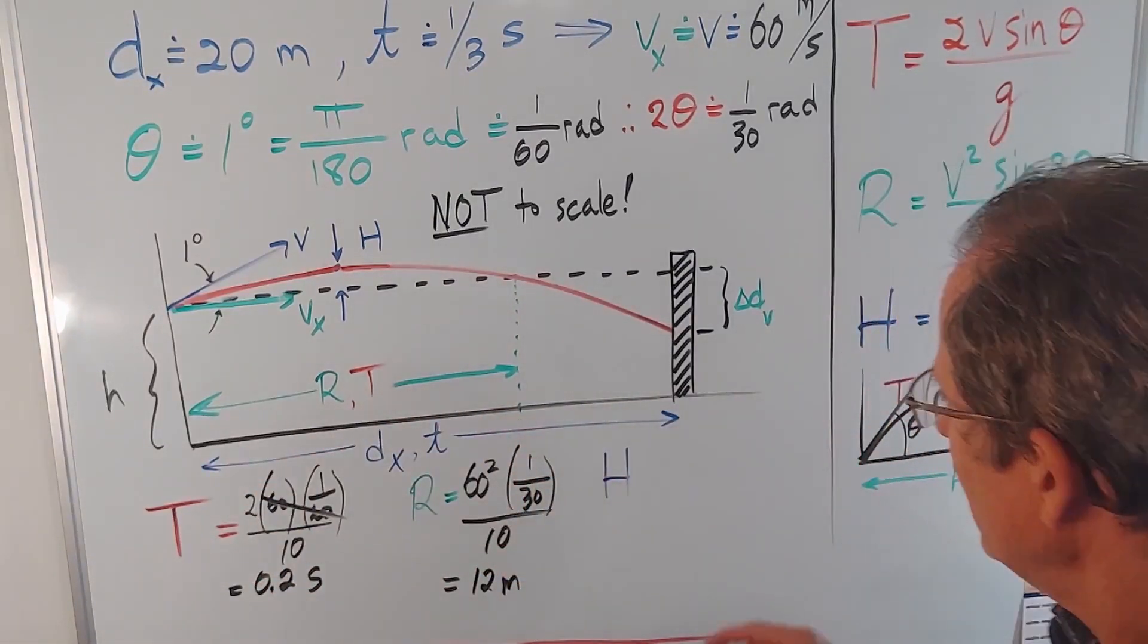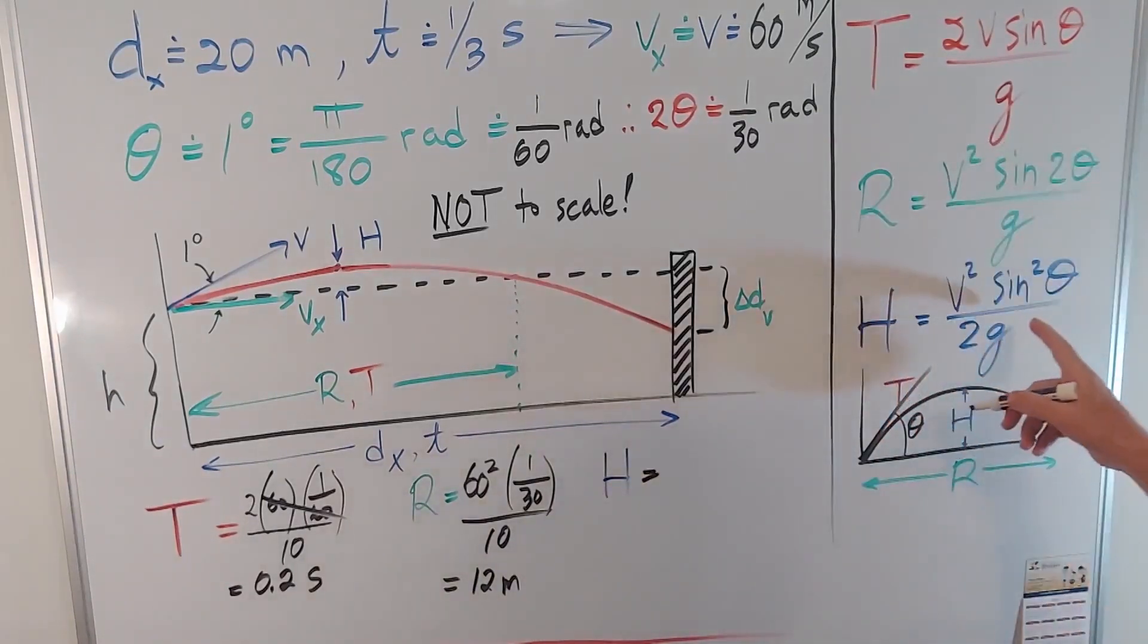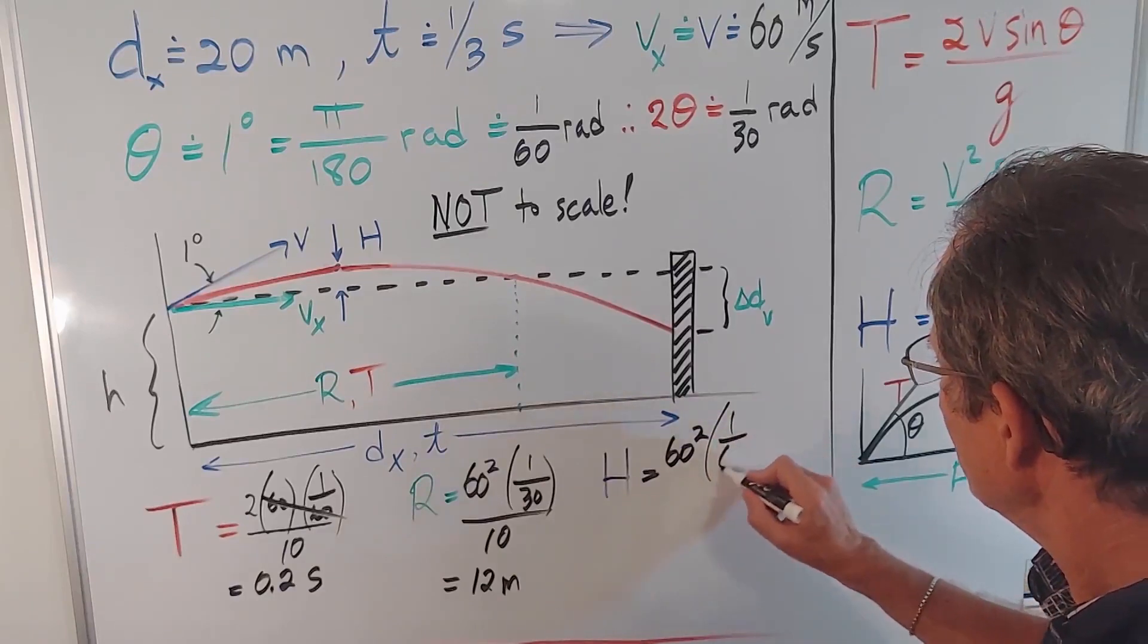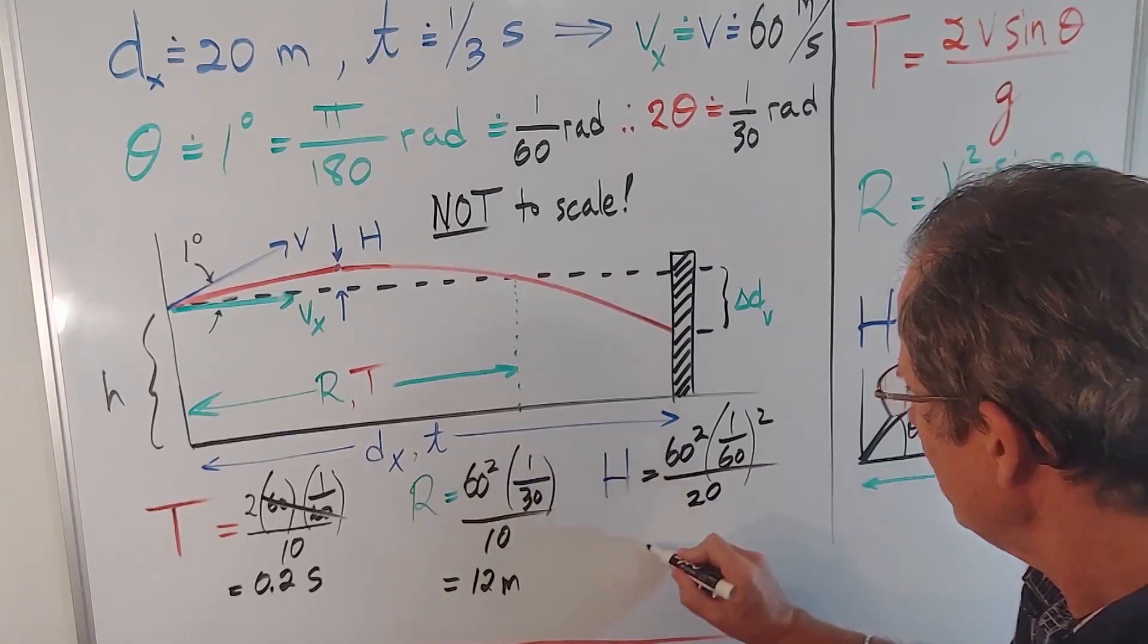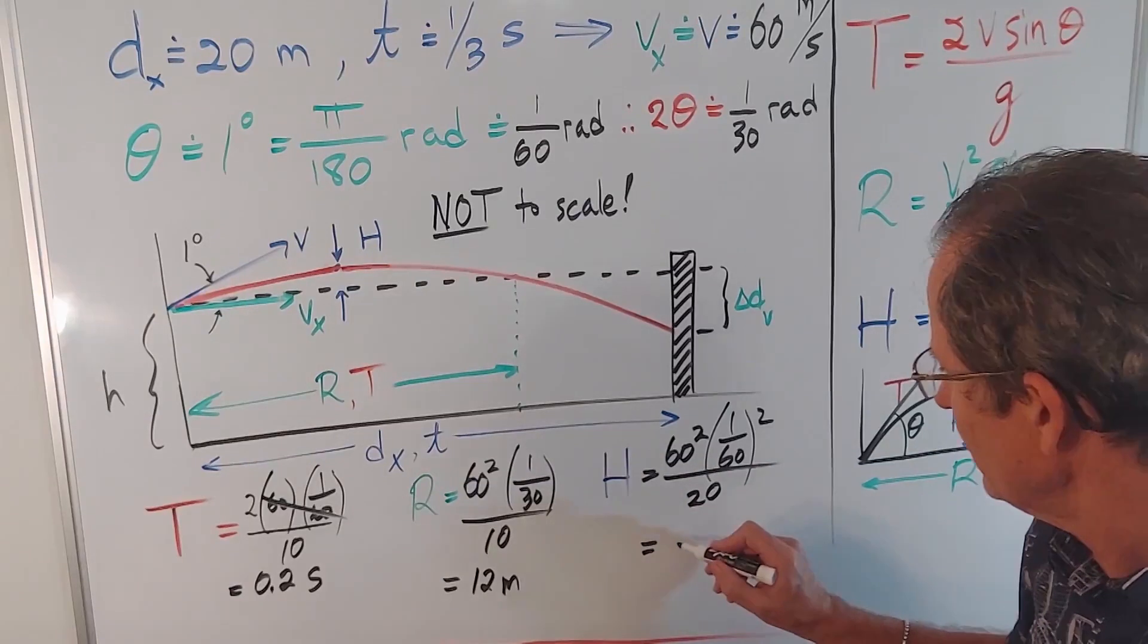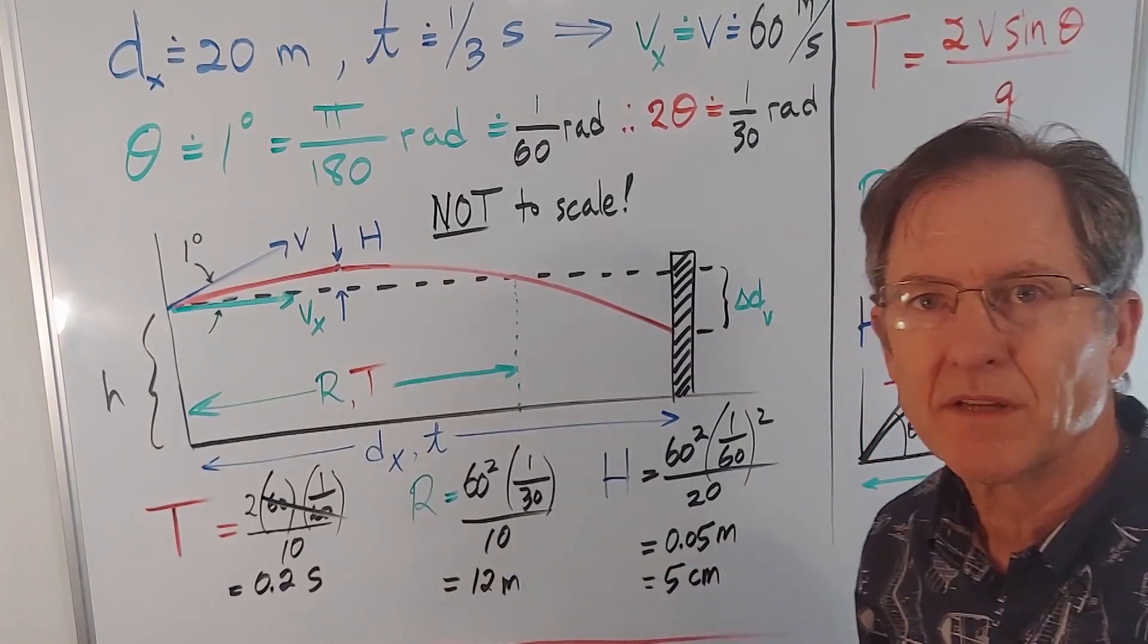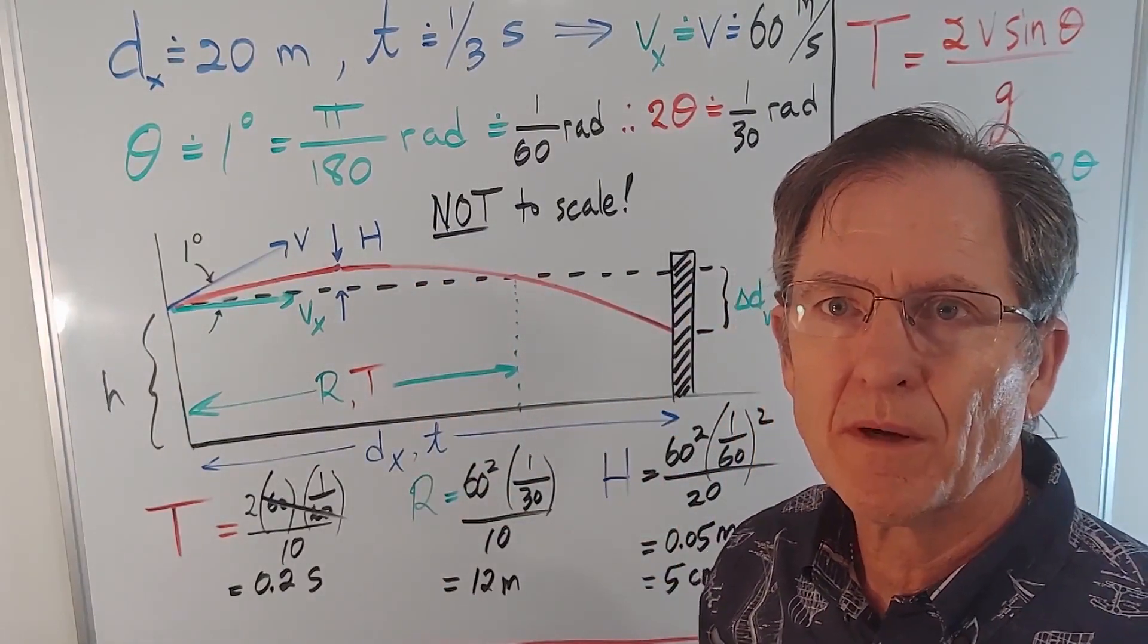And the height, V squared sin squared θ over 2g, so 60 squared times θ, 1 over 60 again, but don't forget it's squared, over 20. Now, conveniently, those 60s all cancel, so I get 1 over 20, or 0.05 meters, which is about, or exactly, 5 centimeters. So this height is 5 centimeters. The arrow does not go up very much at all, which makes sense.